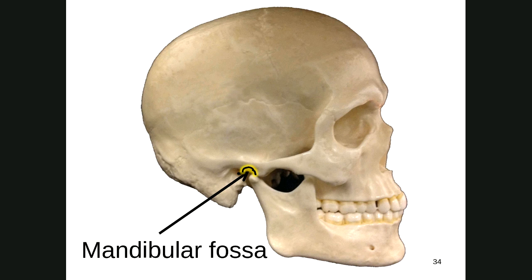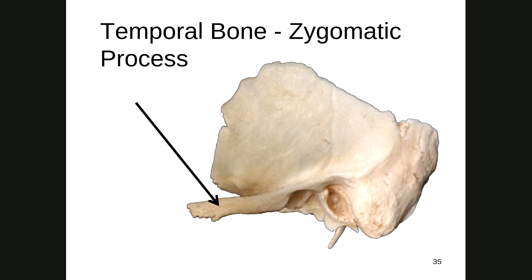Even more anterior to the external auditory meatus, there's a long bony projection. When you see a bone or part of a bone projecting off, it's called a process. This is called the zygomatic process of the temporal bone — you have to write all that out. The temporal bone is going to articulate with the zygomatic bone.